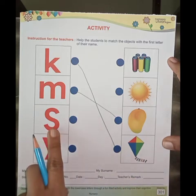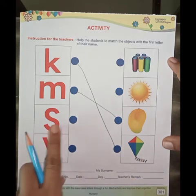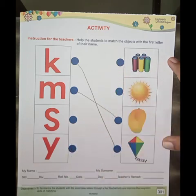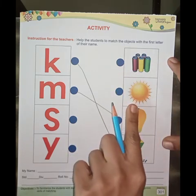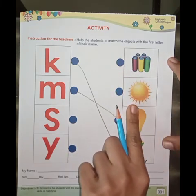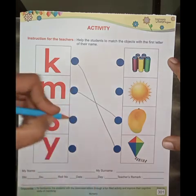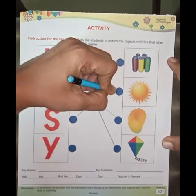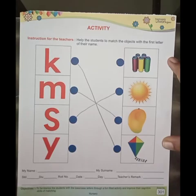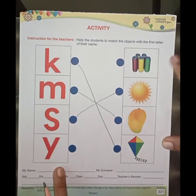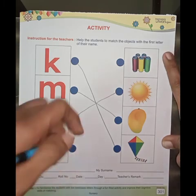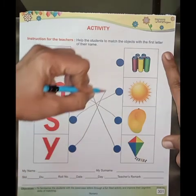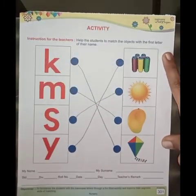Now S for Sun. Then we will match — S for Sun. And now the last is little Y — Y for Yarn. Then take a pencil and match.